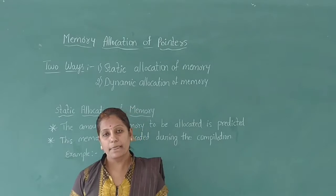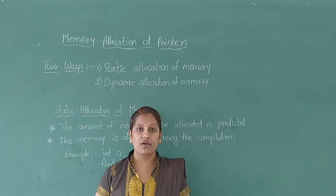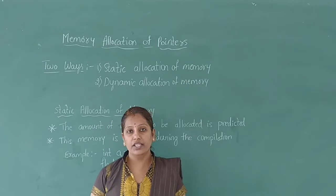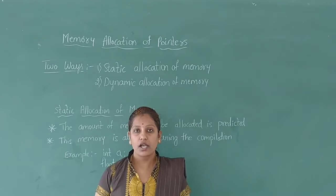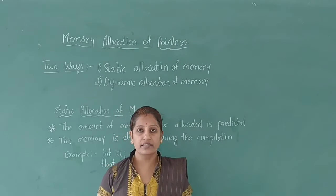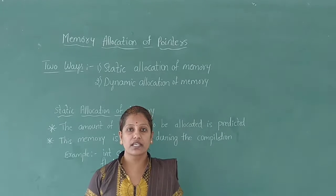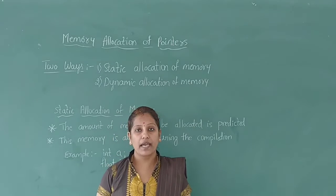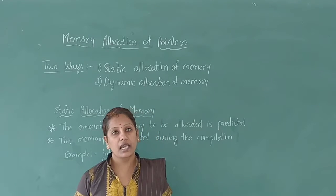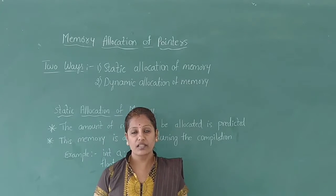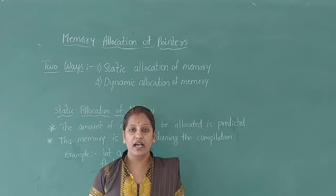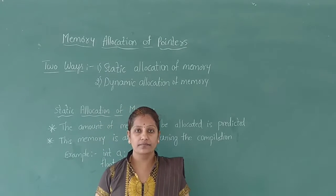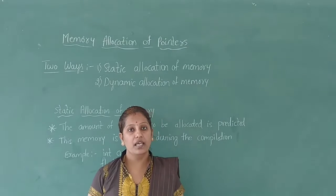The compiler allocates the required memory space for a declared variable. For example, an integer variable reserves 2 bytes, a float variable reserves 4 bytes, a double variable reserves 8 bytes, and a character variable reserves 1 byte of memory space for the declared variable and instructions. Therefore, every data and instructions being executed must be allocated in main memory or primary memory.